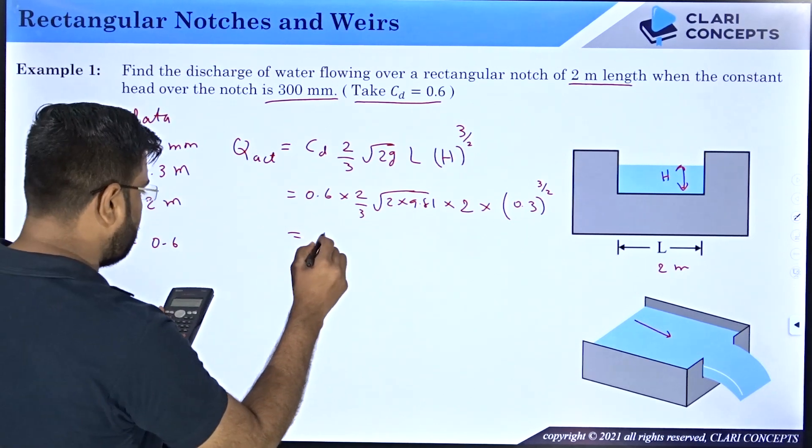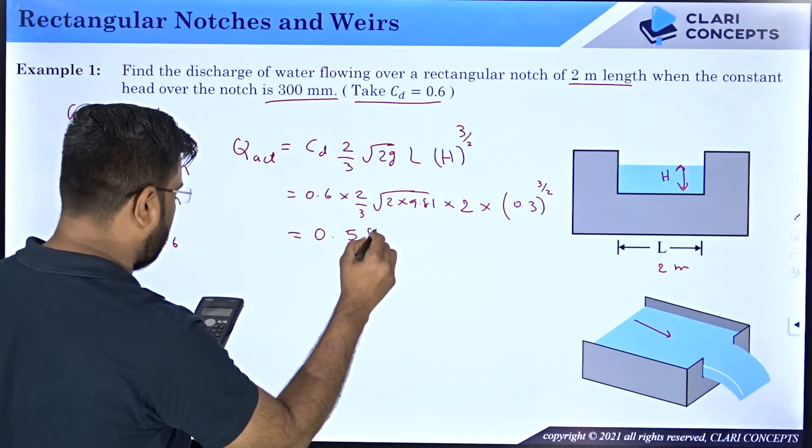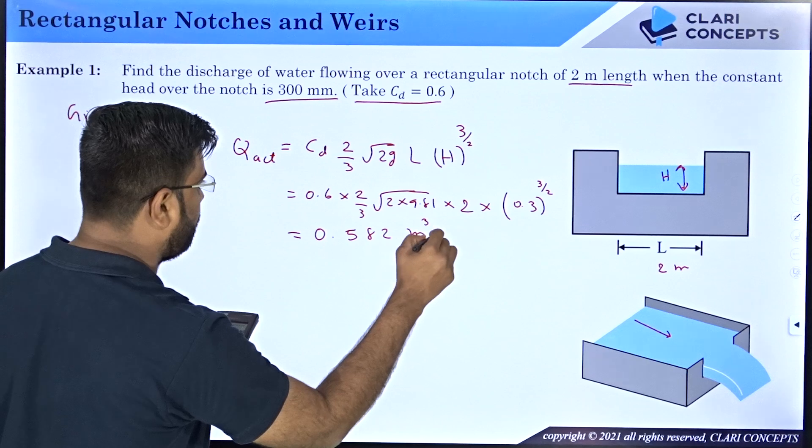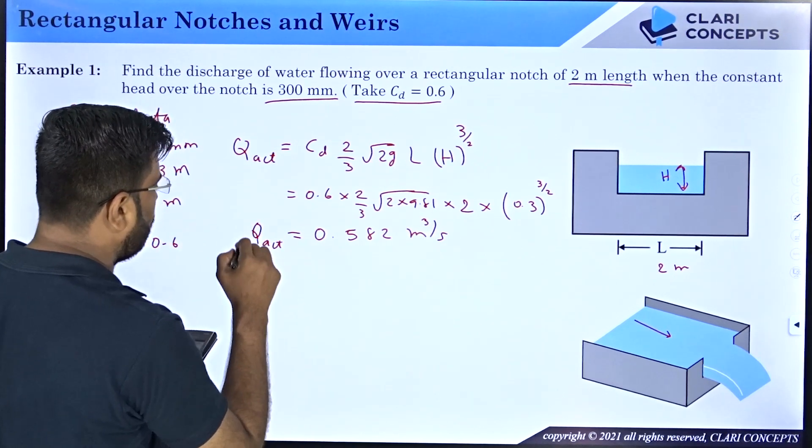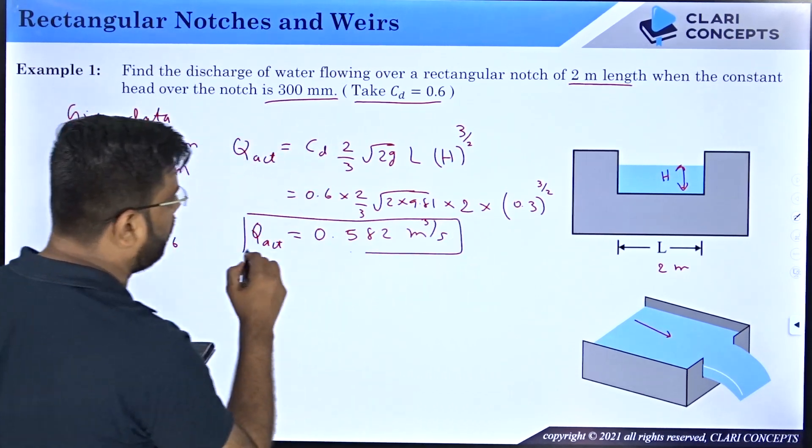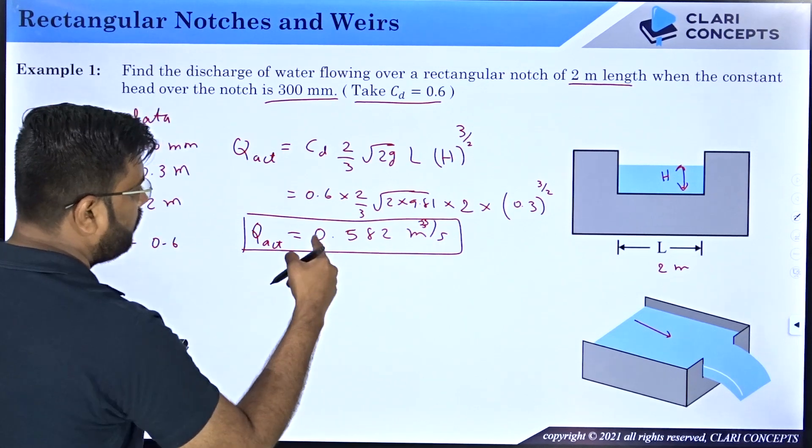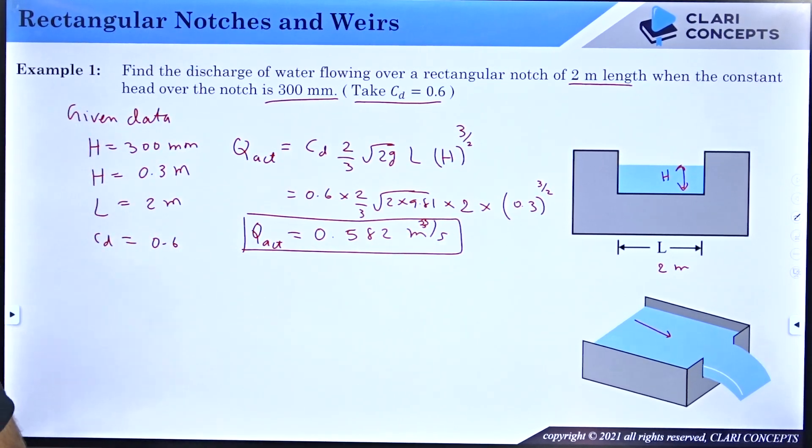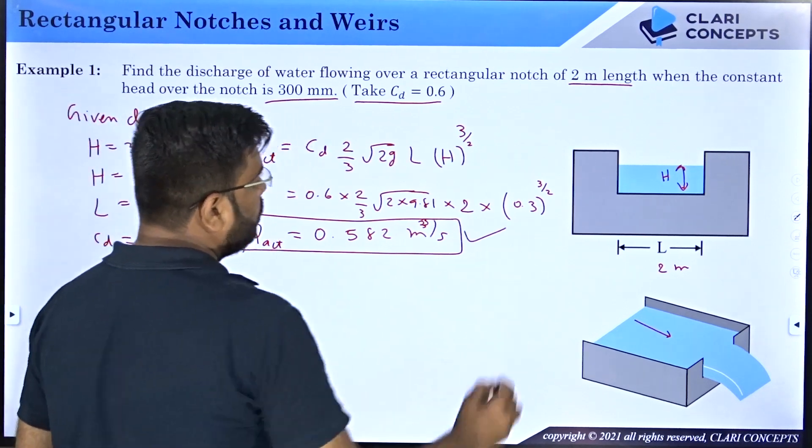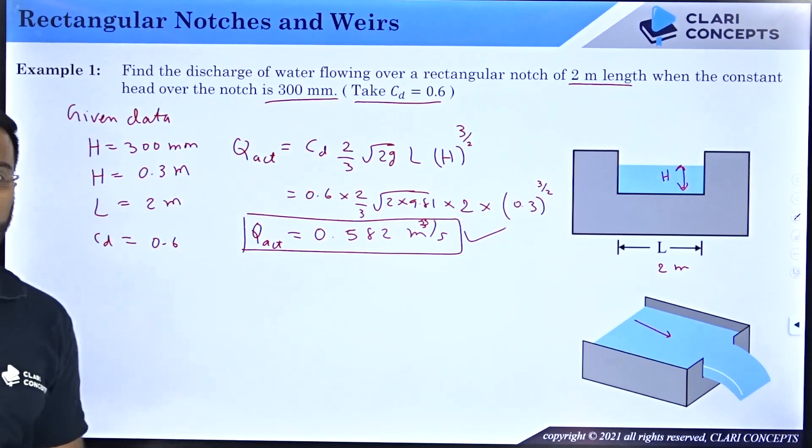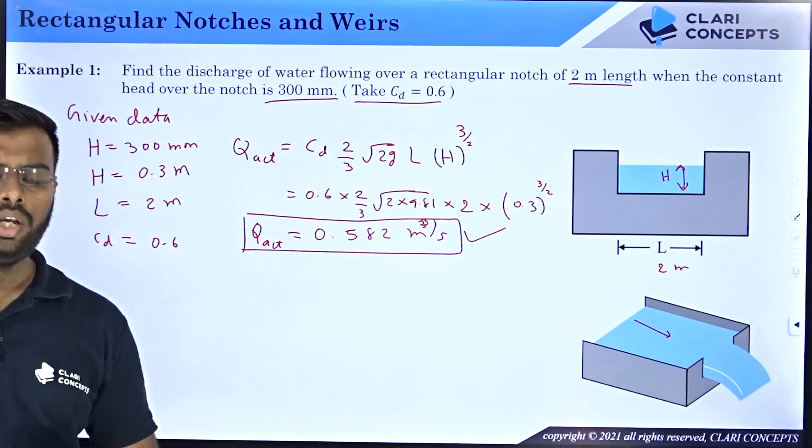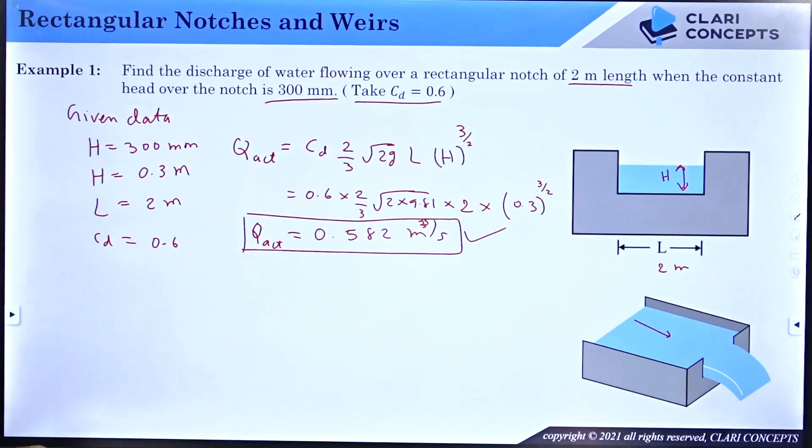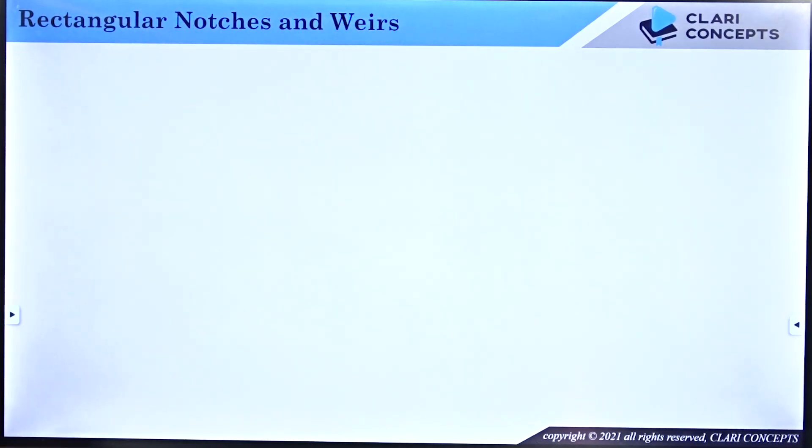I am getting 0.582 meter cube per second as the flow rate. So the actual flow rate of water flowing through this open water body is 0.582 meter cube per second. Let me check the answer. Yes this is correct. So I hope you understood how to calculate the flow rate of water flowing through open water bodies like canals and rivers using rectangular notches and weirs.